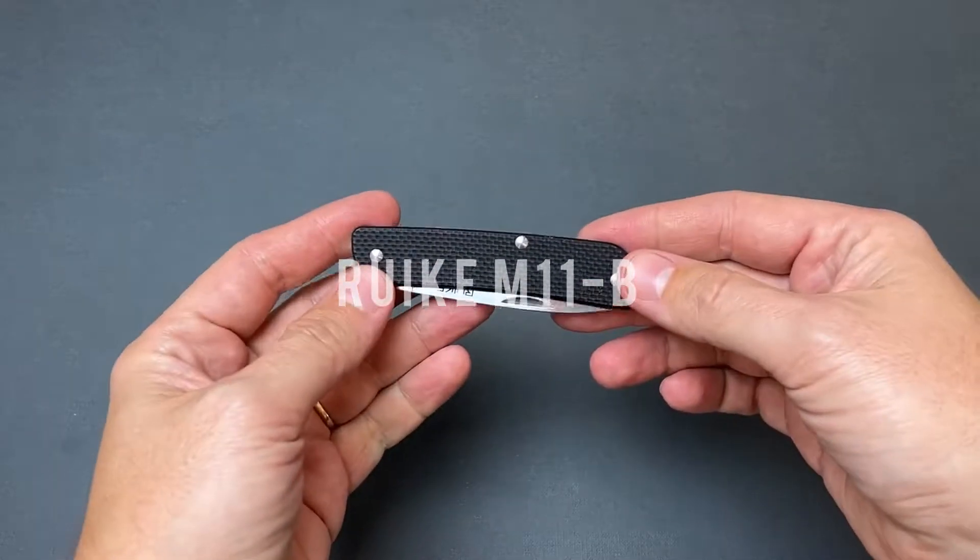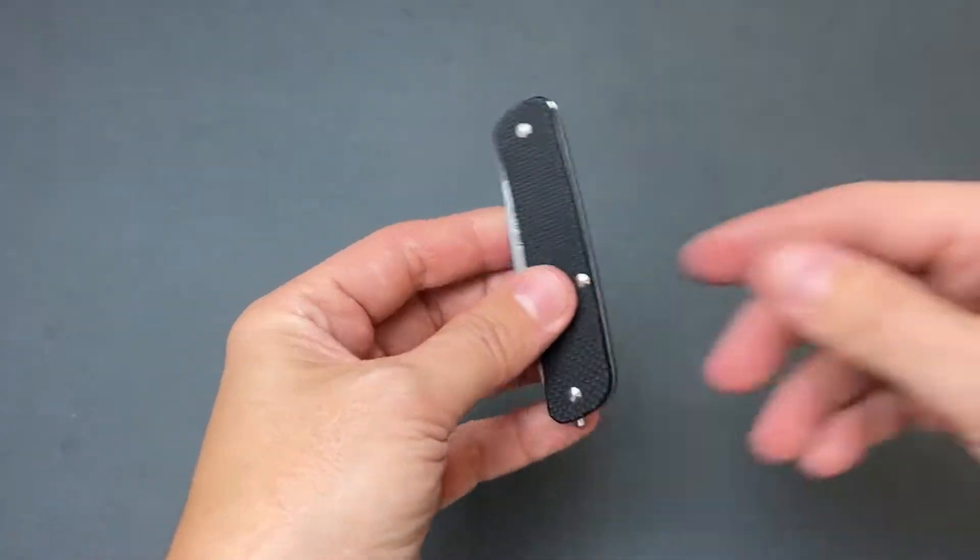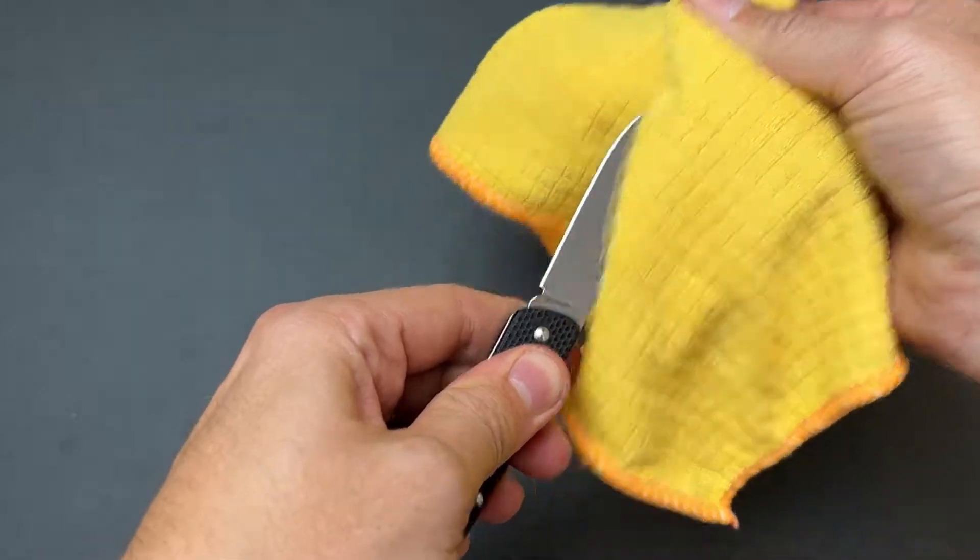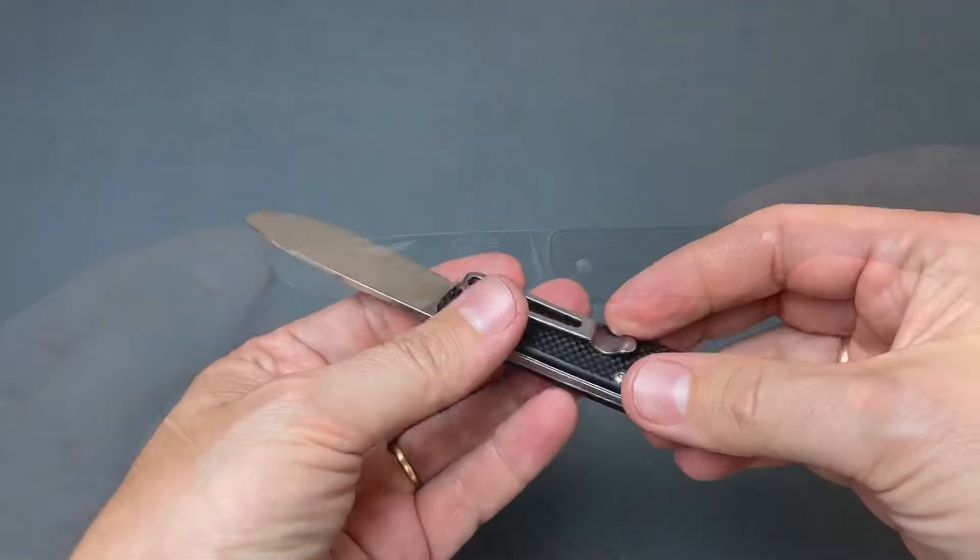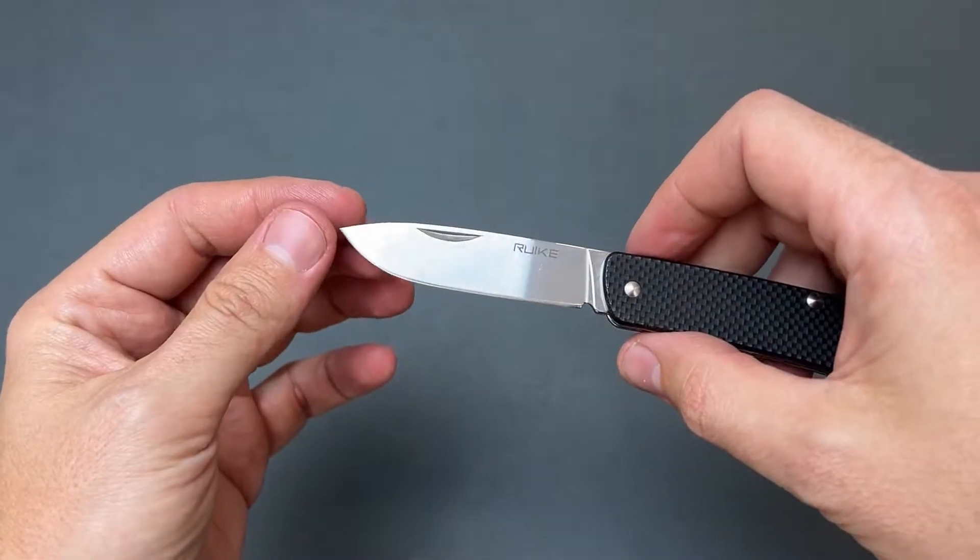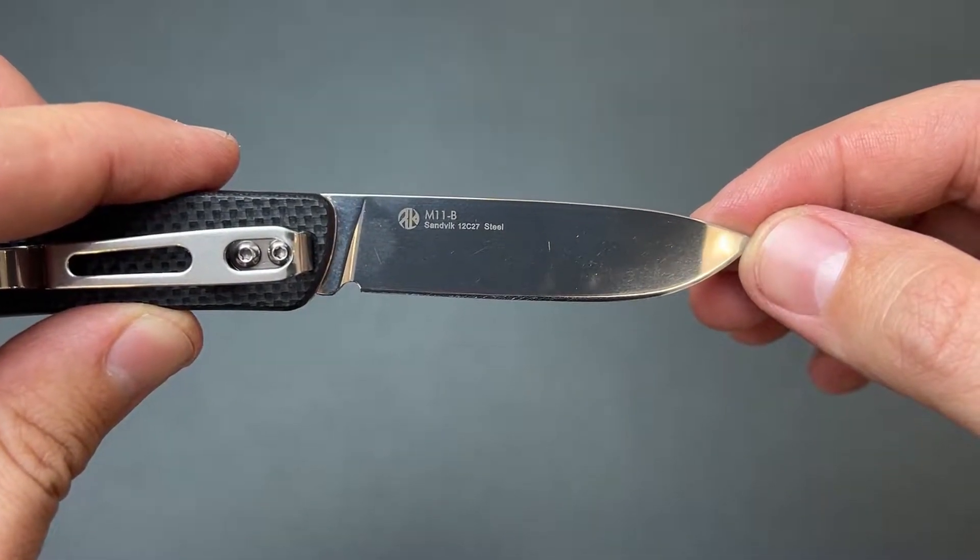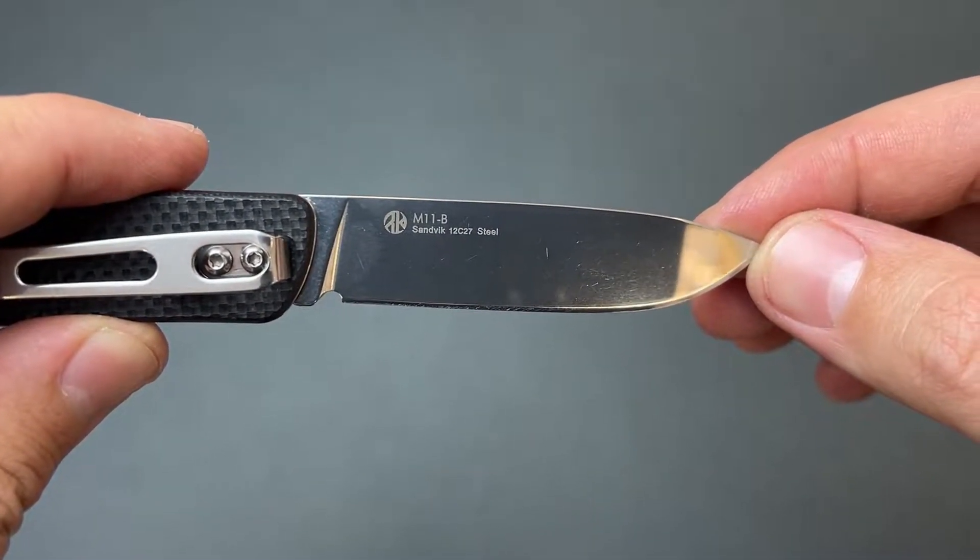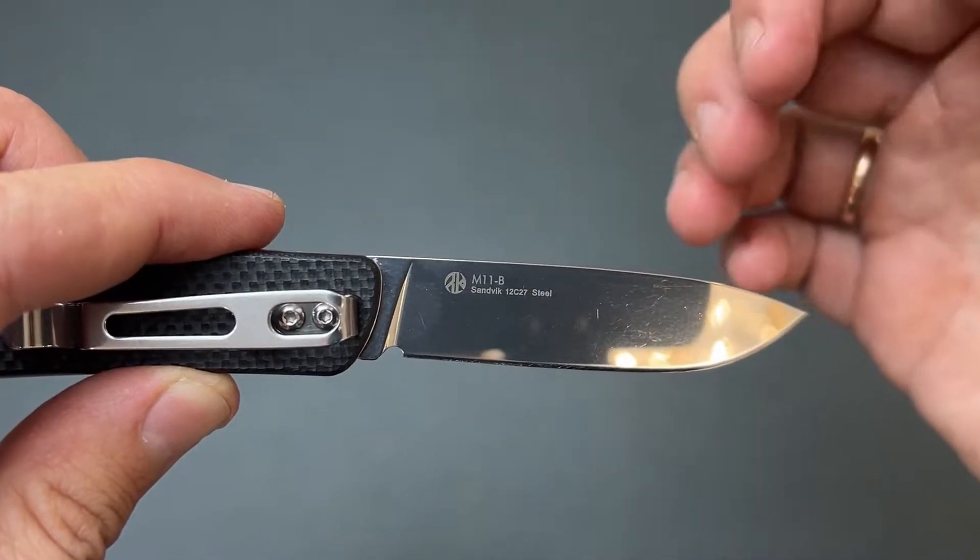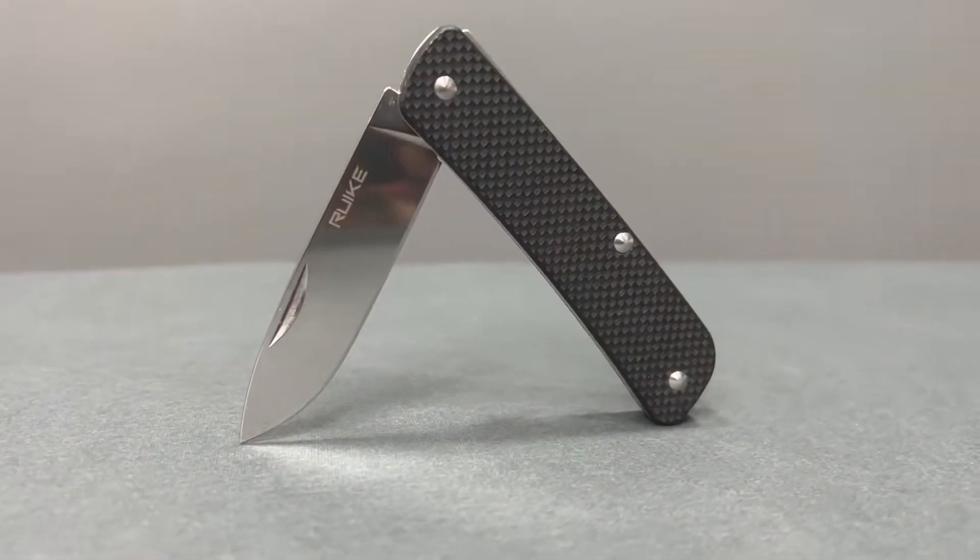The next thing of course is a knife. I use it every day and carry it in my pocket. This is from a Chinese brand called Reiki. It has a pocket clip, sharp enough from the box, and the steel is Sandvik 12C27. The model is called M11B. B means black color because they also produce it in military green.